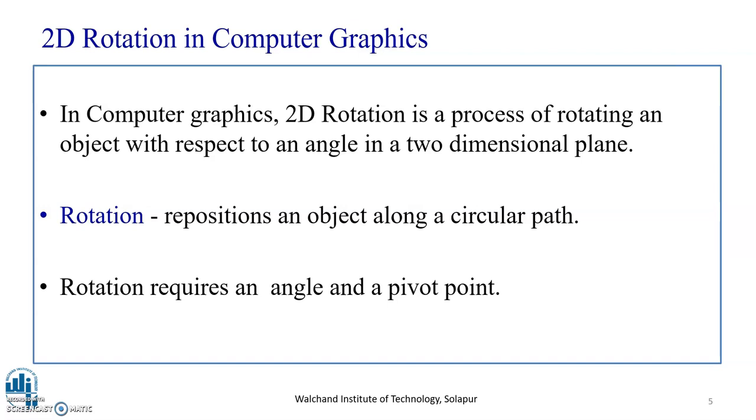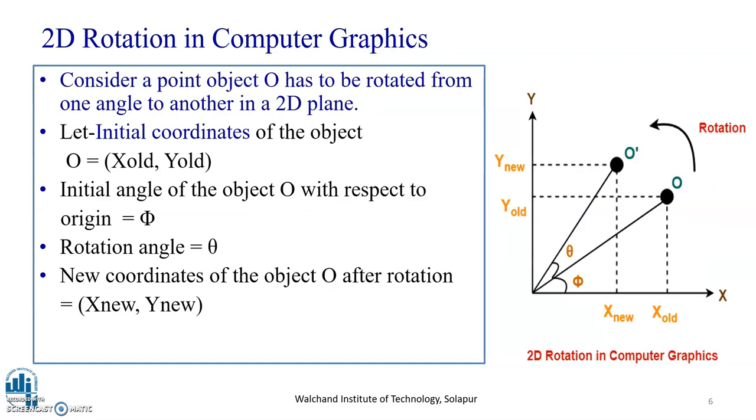What do we mean by this? Whenever we want to rotate any graphic primitive, maybe a line, a circle, a polygon, a triangle, a square, we require an angle with which we have to rotate that given graphic primitive and a pivot point. As seen over here, consider a point object O that is to be rotated from one angle to another in a two-dimensional plane. As we can see in the given diagram, this is a point object O which is to be rotated from one angle to another. The original angle with respect to the X line is phi, termed as X-old.